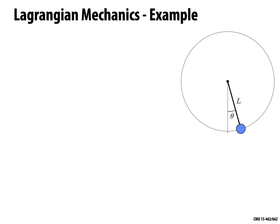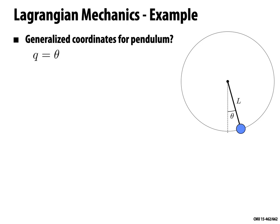Let's apply this to the pendulum. The first question is: what are our generalized coordinates Q for this system? One natural choice — rather than worrying about x, y with the constraint x-squared plus y-squared equals length-squared — is to describe the state by the angle theta that the pendulum makes with the vertical direction. That's a perfectly good encoding of the state, and we know it always respects the constraint: no matter what theta we have, we're describing a point on the circle.